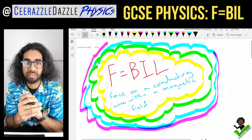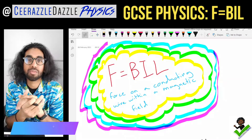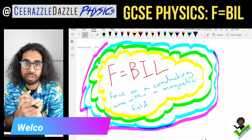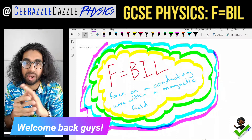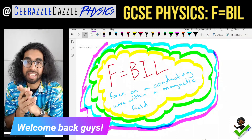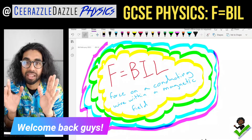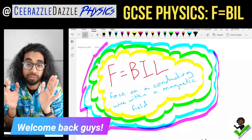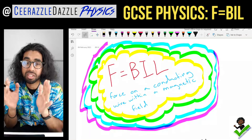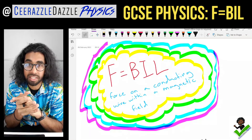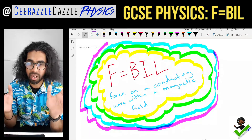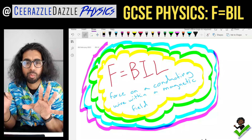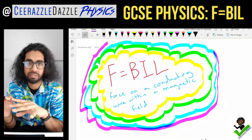Hey everyone, welcome to another session of Sir Aswell Dazzle Physics. In today's session we'll be talking about using the formula F = BIL, which is how to calculate the force on a conducting wire within a magnetic field.